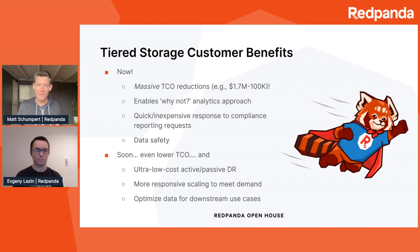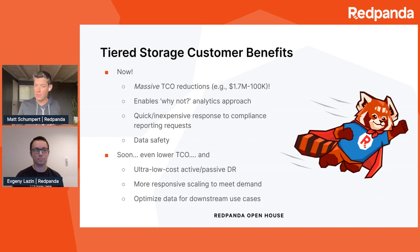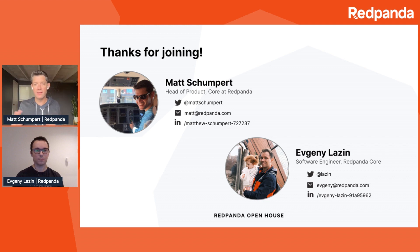Soon, these benefits will expand with push-button, ultra-low-cost, instantaneous disaster recovery for an entire cluster using an active-passive approach where the second cluster comes up on demand with very low RPO — across the whole cluster with all metadata, not just per topic. You can also scale to meet demand, sizing your cluster just in time without planning for peak load months in advance, adding new brokers very quickly with no performance degradation observed by consumers. Finally, optimizing data for downstream use cases — tiered storage and this cloud-first approach frees us architecturally to add analytical use cases easily. These are transformational advantages in terms of TCO and agility. Thanks for watching, and enjoy the rest of the open house.